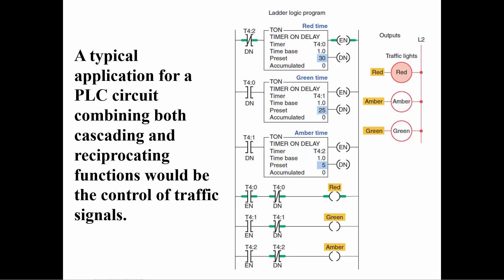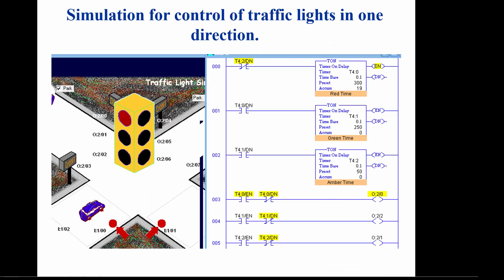The last three rungs actually turn on the lights. Each light is turned on when its respective timer's enable bit is true and its done bit is false. The simulation has been captured about two seconds into the timing for the red light. Observe how the done bit of each timer controls the next timer in sequence.